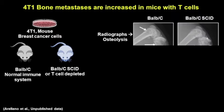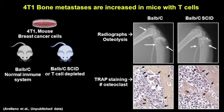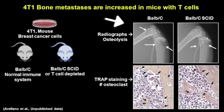For that, we used two different models: severe combined immunodeficient, or SCID mice, and T cell depleted mice. In both of these models, we found that the presence of T cells causes more bone metastases, a bigger osteolysis area, and a greater number of osteoclasts, suggesting that T cells increase bone metastases by increasing osteoclasts.